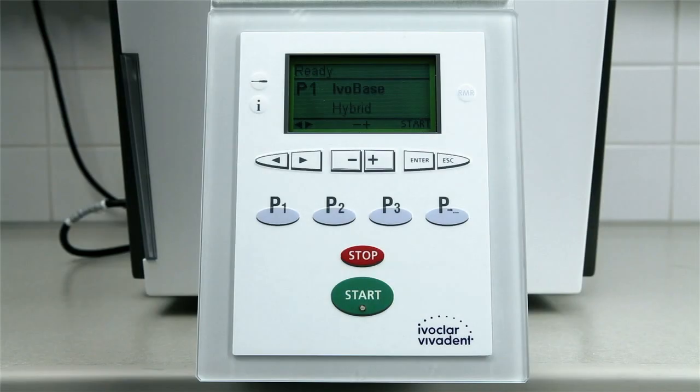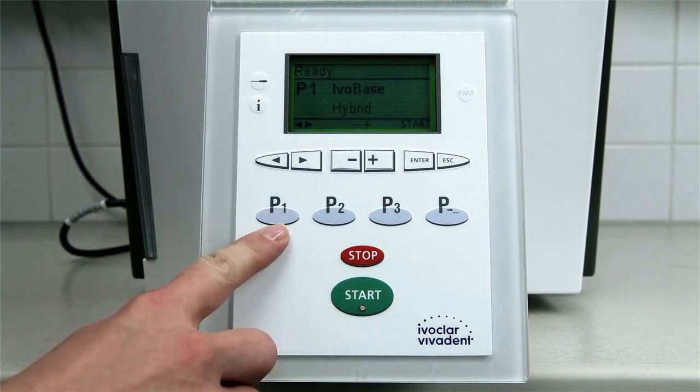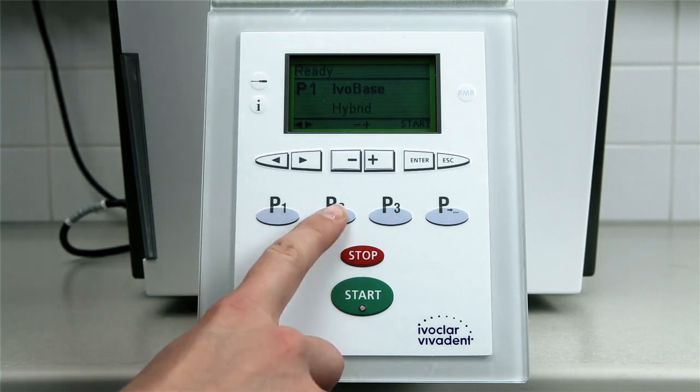For optimum results with IvoBase Hybrid and IvoBase High Impact, the IvoBase injector is equipped with polymerization programs especially designed for the respective materials: P1 for Hybrid, P2 for High Impact.